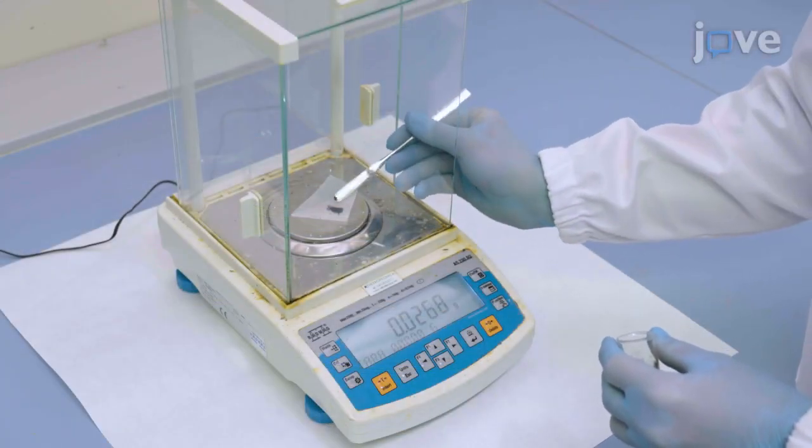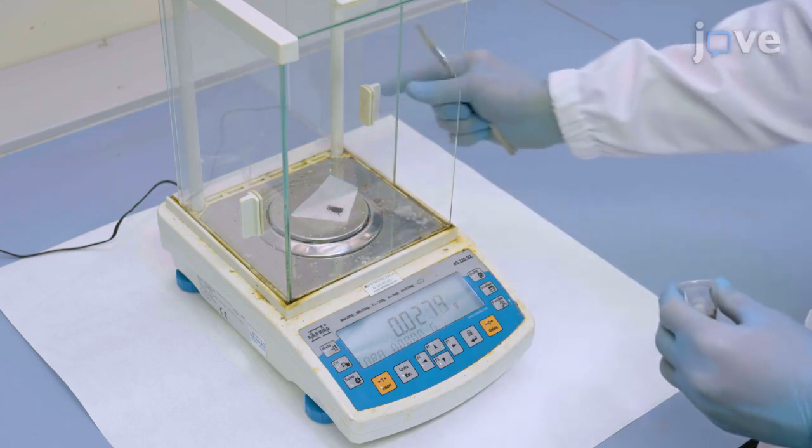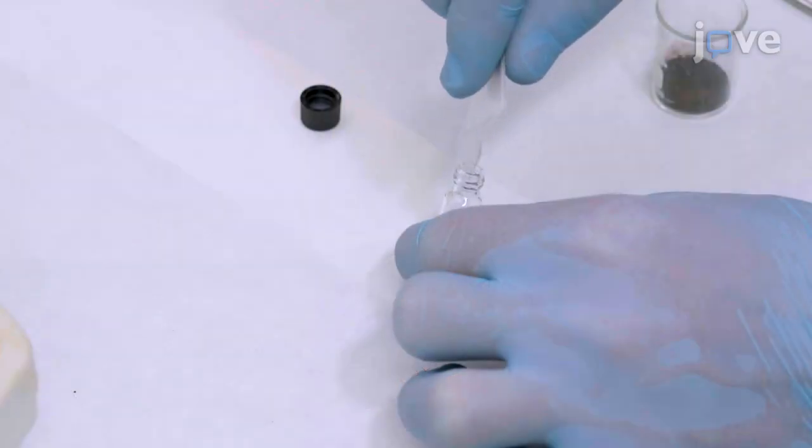To prepare the sample for NMR spectroscopy, accurately weigh about 30 mg of the sample in a 2 mL vial equipped with a stirring bar.